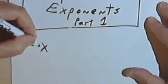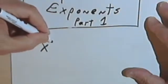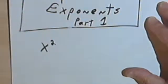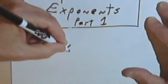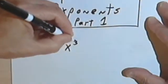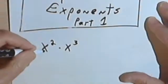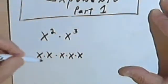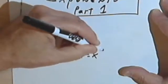Let's say we've got a number x with an exponent of 2 — it's x-squared — and we want to multiply it by x to the third. Let's see what we're really doing. x-squared is the same as x times x, and we're multiplying that by x to the third, which is the same as x times x times x. Now if we look at what we have here, we've got five x's that are all being multiplied.